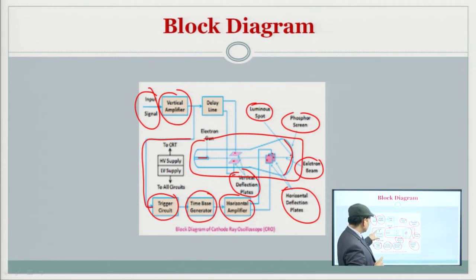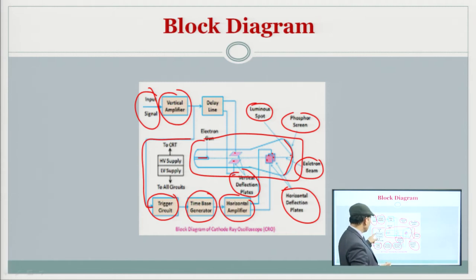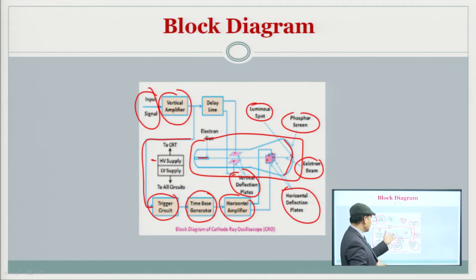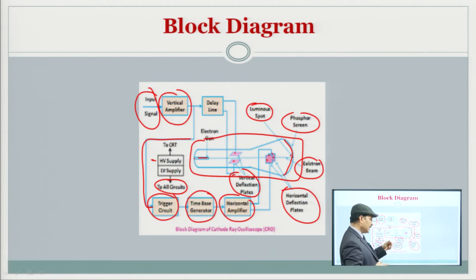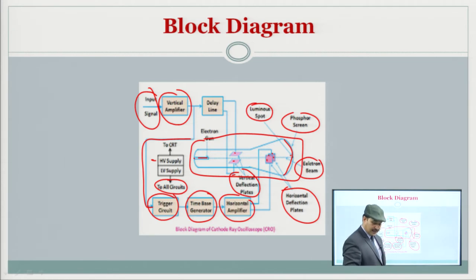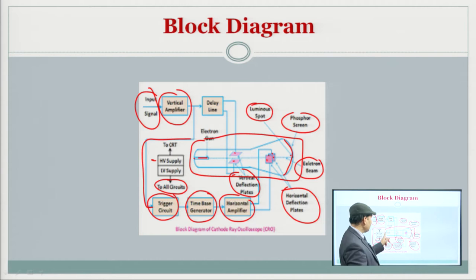The CRT uses two different types of supply. High voltage supply is for the main circuit, and the deflection plates are major components. The other supporting circuits use a low voltage supply. This is the block diagram of the cathode ray oscilloscope.